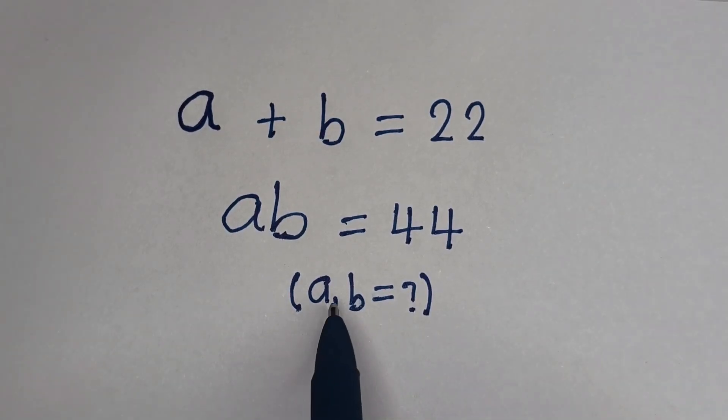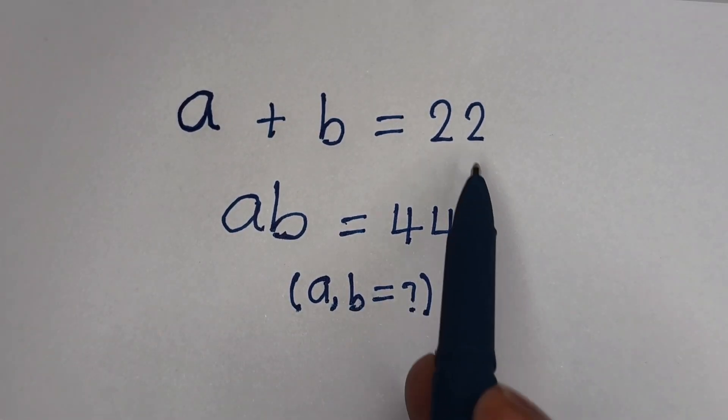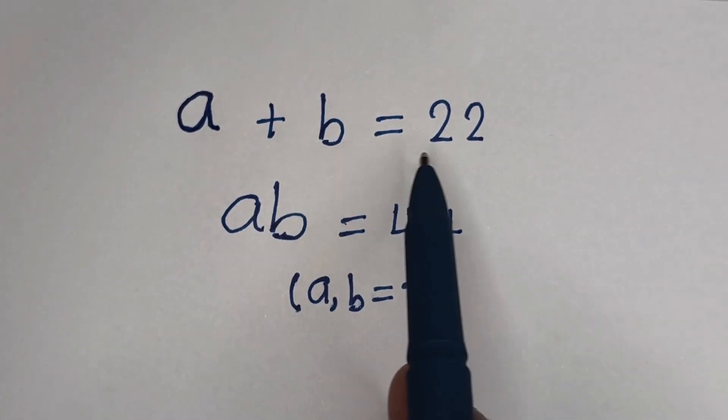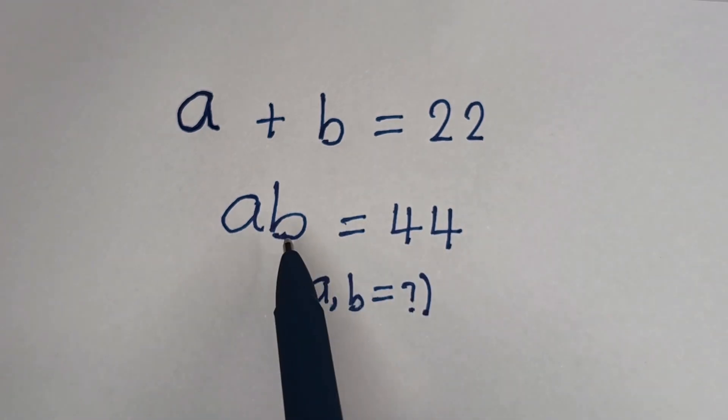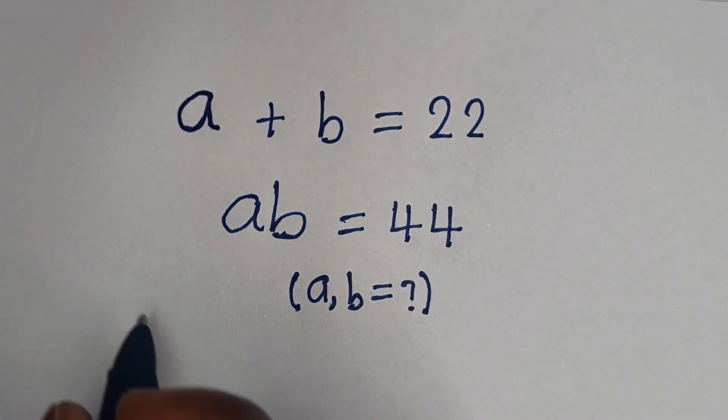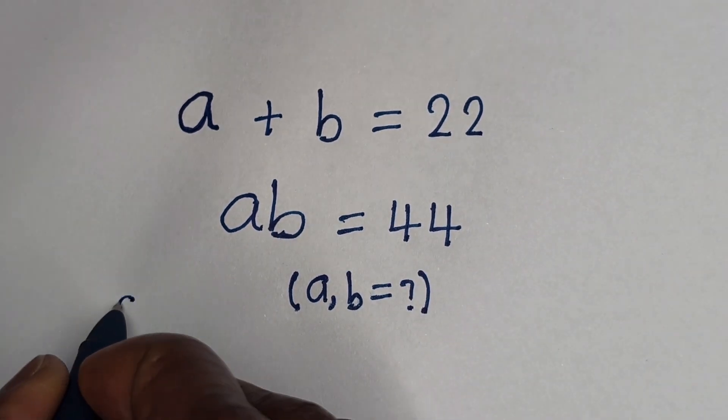Hello. How to solve for A and B in this equation: A plus B is equal to 22, and A times B is equal to 44. Solution.